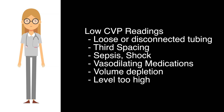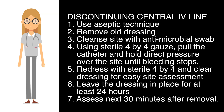Troubleshooting low CVP readings: Check for loose or disconnected tubing, third spacing, sepsis, shock, vasodilating medications, volume depletion, or a level set too high. To discontinue the central IV line: use aseptic technique, remove the old dressing, cleanse the site with an antimicrobial swab, use sterile 4x4 gauze to pull the catheter while holding direct pressure until bleeding stops, redress with sterile 4x4 and clear dressing for easy site assessment, leave the dressing in place for at least 24 hours, and assess the site 30 minutes after removal.